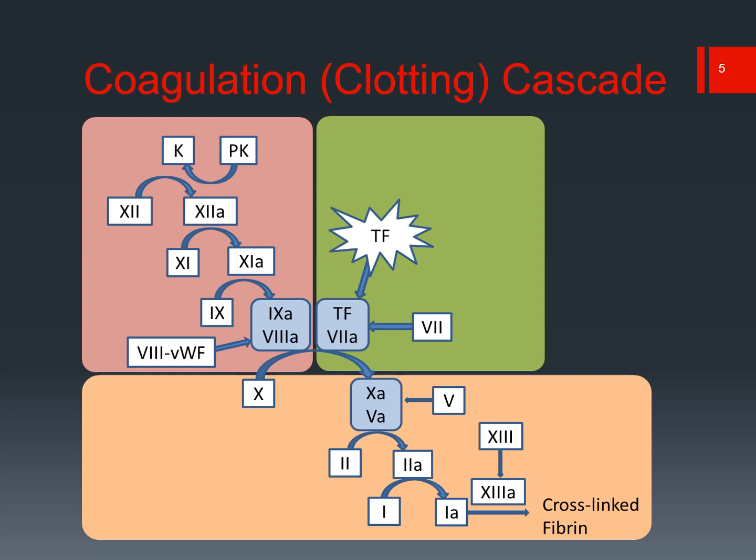Here we see the coagulation cascade from P1 year. The intrinsic pathway begins with prekallikrein going to kallikrein, 12 to 12a, 11 to 11a, 9 to 9a, and 8a coming in from the side, which is self-activatable. That activates the common pathway beginning with 10 to 10a. Factor 5a combines with 10a and calcium to activate prothrombin to thrombin.